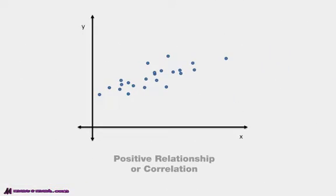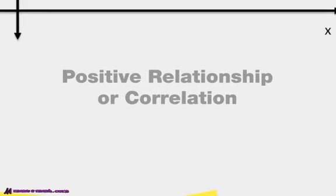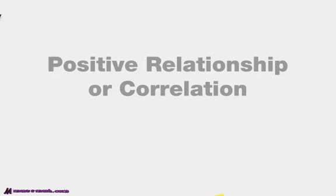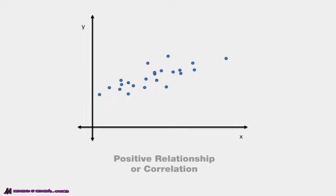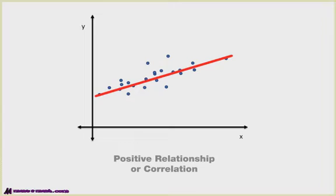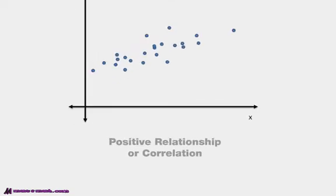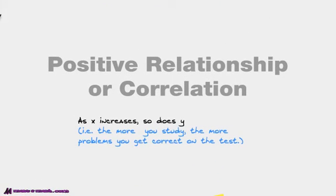And there's three different ways that we can describe it. And this is called a positive correlation or positive relationship. If you notice, take a line, we're going to kind of make an estimated line here. If we go from there to there, that line kind of gives us what? A positive slope, doesn't it? Positive slope, so therefore it's a positive correlation. As x increases, so does y. For example, the more you study, the more problems you get correct on the test. The more time you take to study, the more problems you get correct.